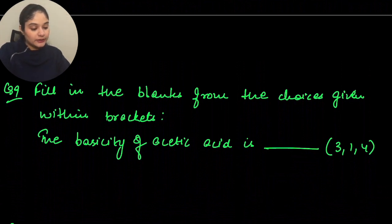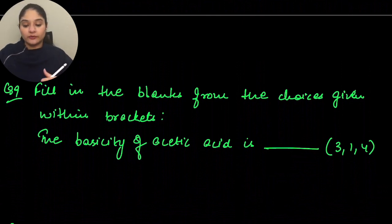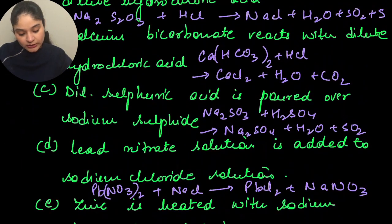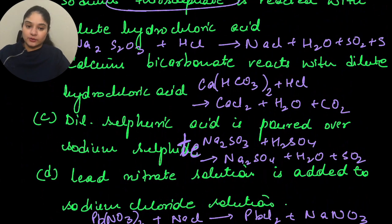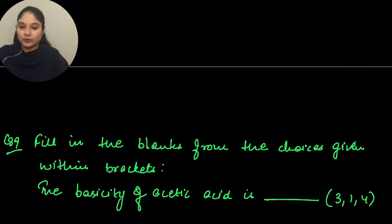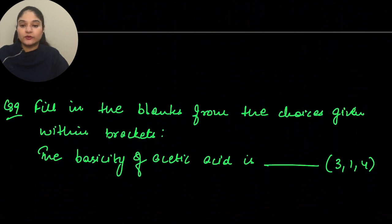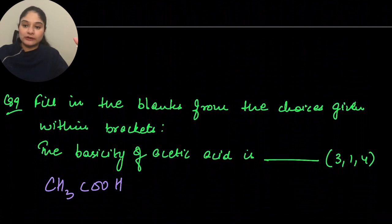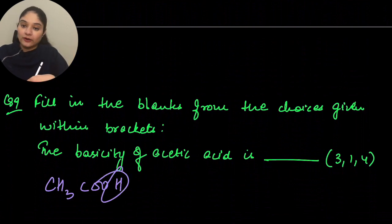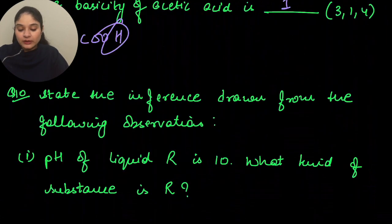Let me clarify a previous question — the compound was sodium sulfite, not sulfide, because with sulfide you always get H₂S. Moving to question nine: the basicity of acetic acid CH₃COOH — only one hydrogen is displaceable, so the basicity is 1. The CH₃ group remains unchanged.